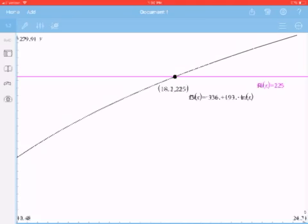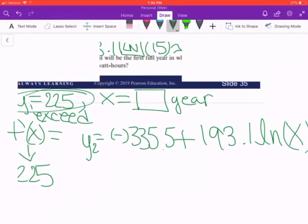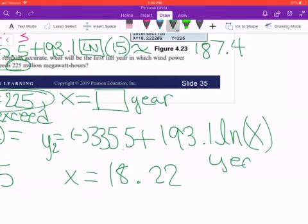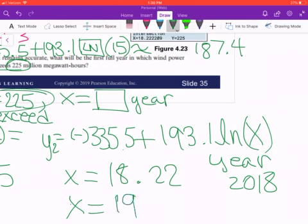Since we're talking about a year, we got x = 18.22. The logical answer would be 2018 if we round down to 18. However, since we want production to exceed 225 million megawatt-hours, we need to round up to the following year. The correct answer is 2019.